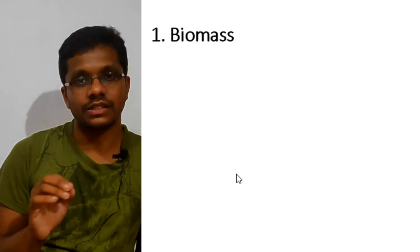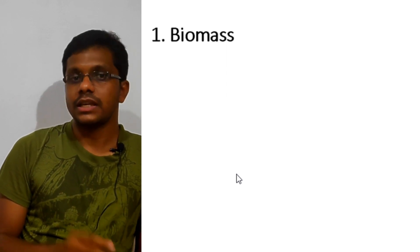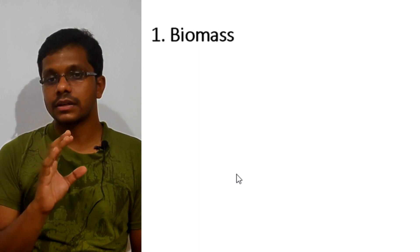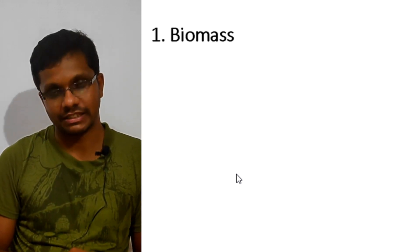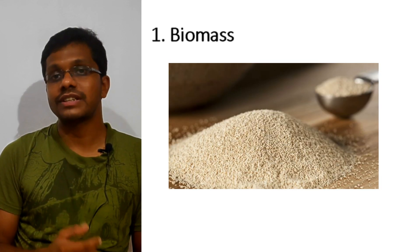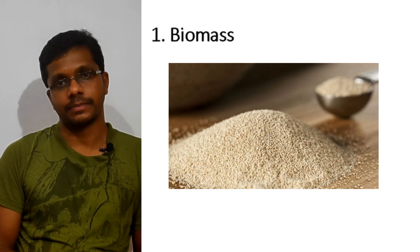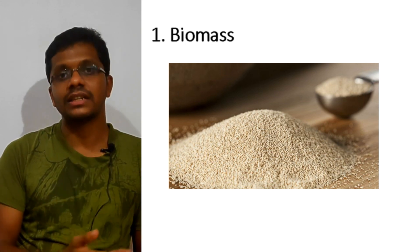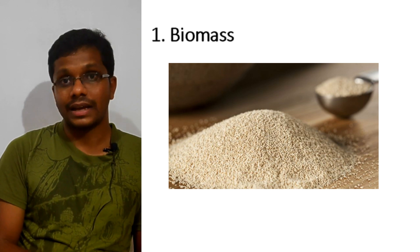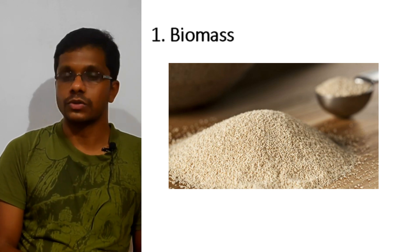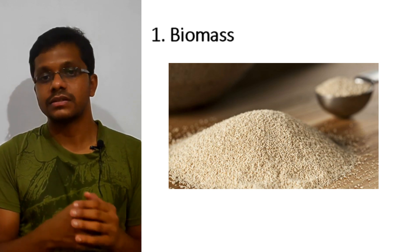The first category is biomass. The industrial production of biomass falls into two categories. The first is the industrial production of yeast, which is very important for the baking industry and the brewing industry. Yeast is the organism that converts glucose and sucrose into alcohol, and bulk production of yeast is used in these industries.